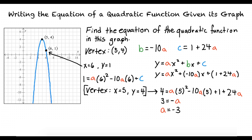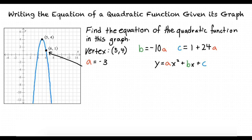Now that we have the value for a and we have values for b and c in terms of a, we can solve for b and c by substituting in our new a value. We found that b is equal to negative 10a, and substituting in the value for a, we find that b is equal to 30. We also found that c was equal to 1 plus 24a, and substituting in the value for a, we find that c is equal to negative 71.